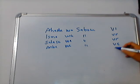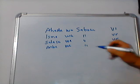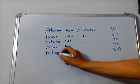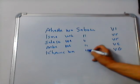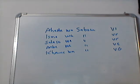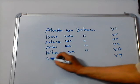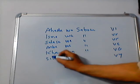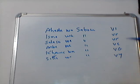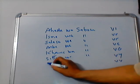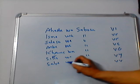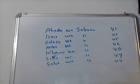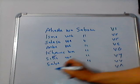75 is written as Khamsa wa Saboon. 76 is written as Chitta wa Saboon. 77 is written as Sabha wa Saboon. 78 is written as Tamaniya wa Saboon.